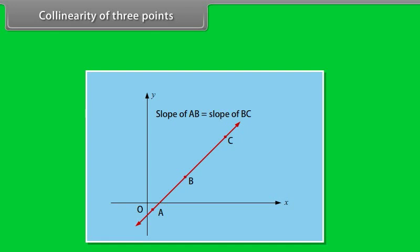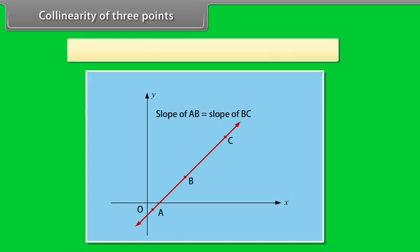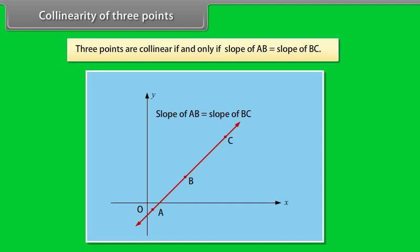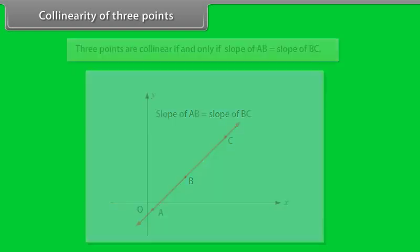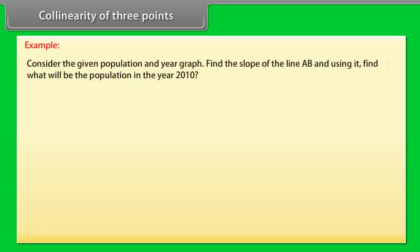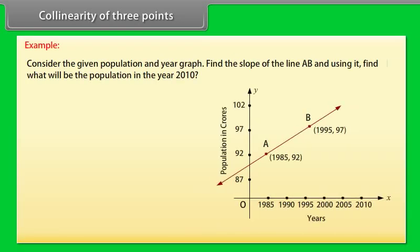Collinearity of Three Points: The points A, B, and C are collinear because they lie on the same line. Three points are collinear if and only if the slope of AB is equal to the slope of BC. Let us solve an example to understand it better. Example: Consider the given population and year graph. Find the slope of line AB and use it to find what the population will be in the year 2010.